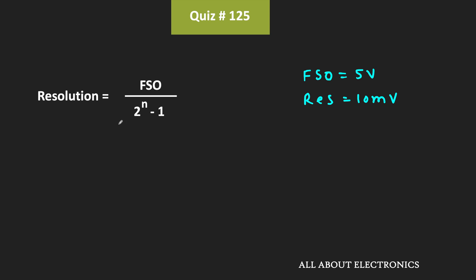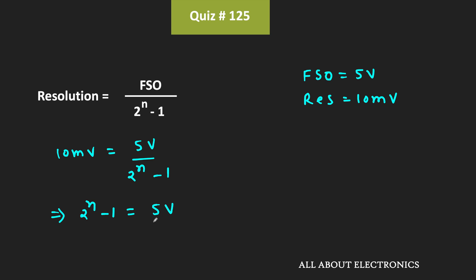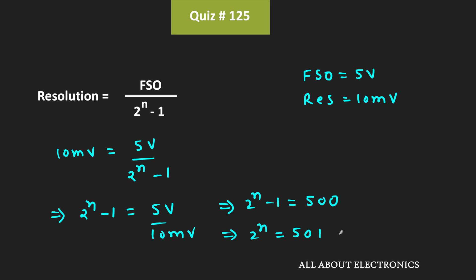By putting these values into the equation and solving for n, we will get the required number of bits for the DAC. The resolution is 10mV and the full scale output voltage is 5V. That means 10mV equals 5V divided by 2 to the power n minus 1. Or we can say that 2 to the power n minus 1 equals 5V divided by 10mV, which gives 500. Therefore, 2 to the power n is equal to 501. Solving for n, the value of n comes out as approximately 8.96.